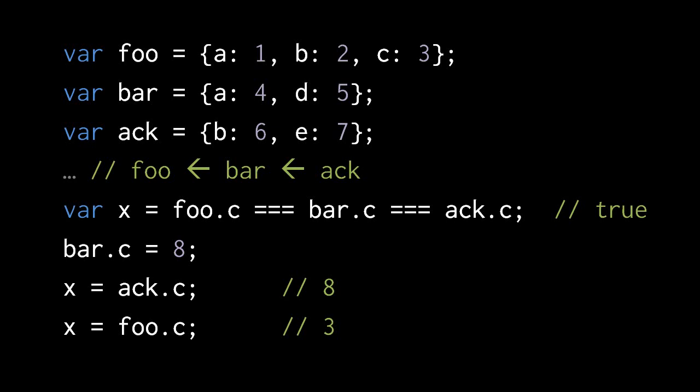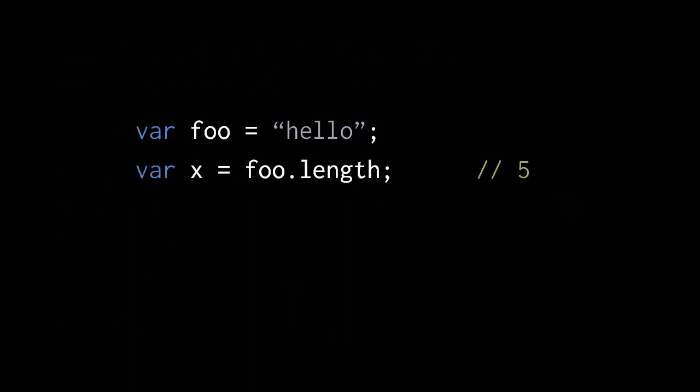It turns out that the basic types in JavaScript, like strings, numbers, and arrays, can act in some ways like objects. Strings, for instance, all have a property named length, which is the number of characters in the string. So if we have a string here which reads hello and we access its length property, we get the value 5, because the string hello has 5 characters.